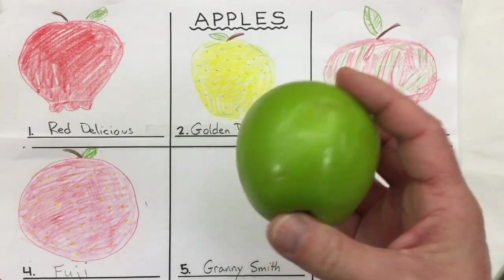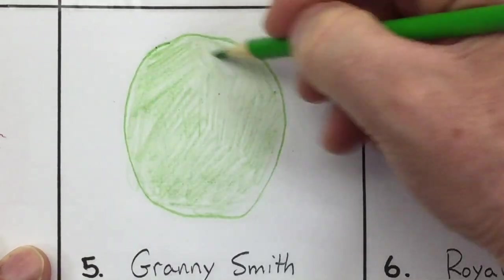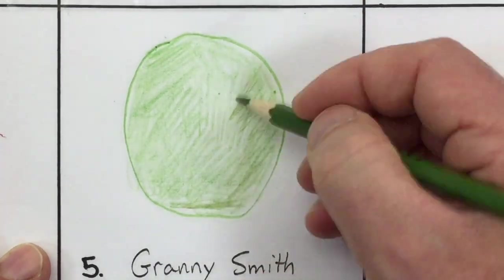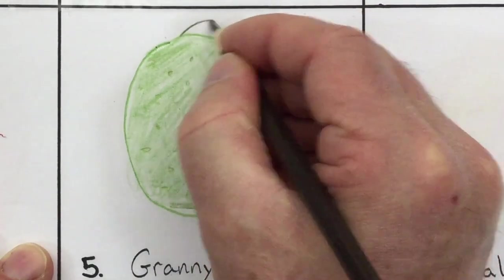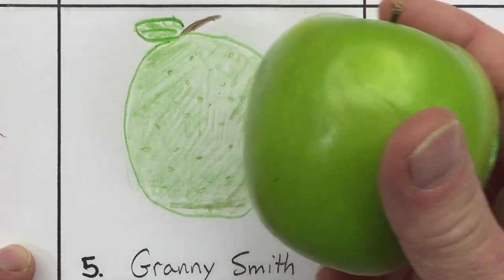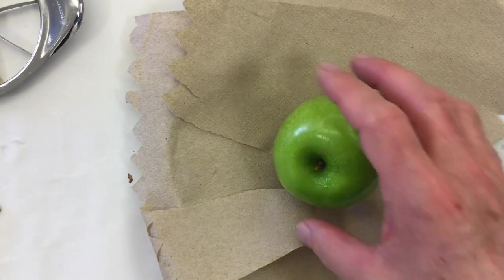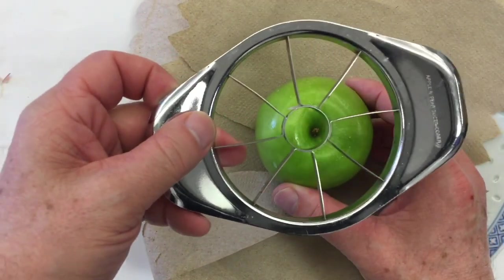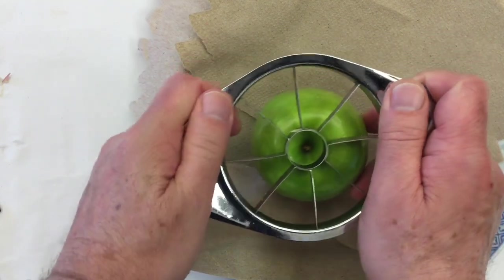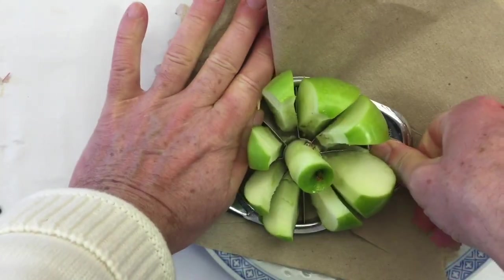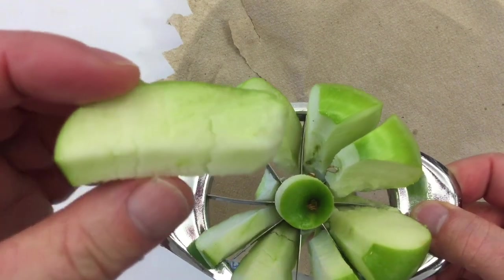Our next apple is the Granny Smith — the green apple. Look how green that is. I've added those little dots in the drawing, and there's our Granny Smith. Sometimes apples don't sit up perfectly straight, and when you use a corer you sometimes have to hold the apple in place so you don't cut it on an angle — but be careful with your hands. That's a big crunch — very big, hard to push through. It has a bit of a green color inside.